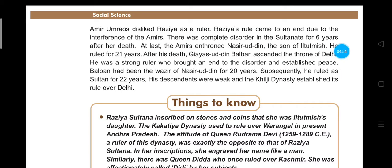After Nasiruddin, Gyasuddin Balban ascended the throne of Delhi. He was Nasiruddin's commander-in-chief and had been his wajir — meaning chief minister — for 20 years. Balban was a strong ruler who brought an end to disorder and established peace. He ruled for 22 years, after which, because of his weak successors, the Khilji dynasty established its rule over Delhi.